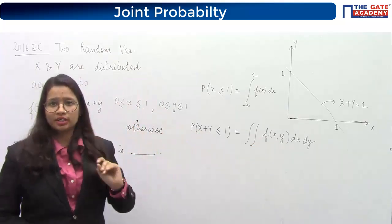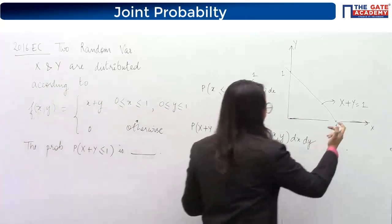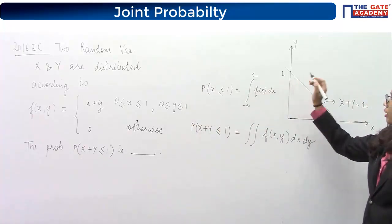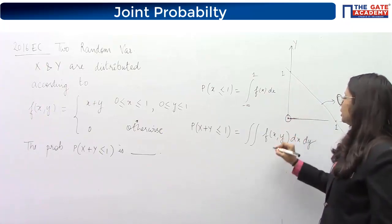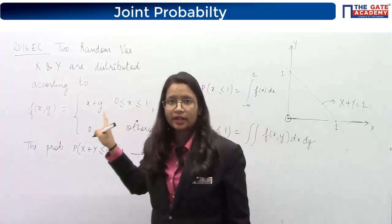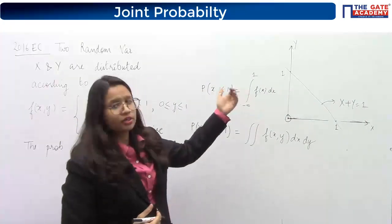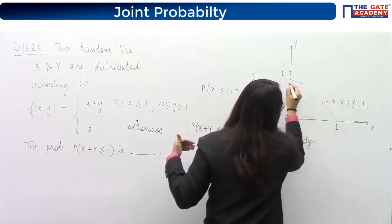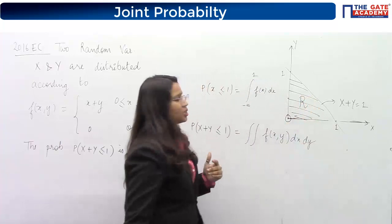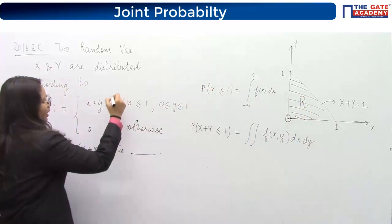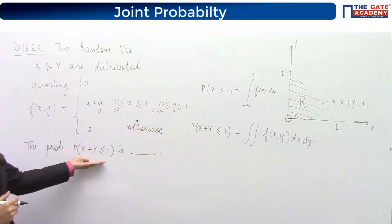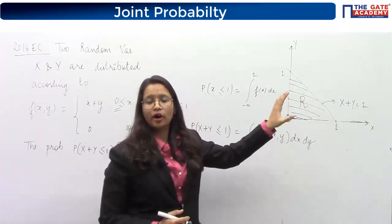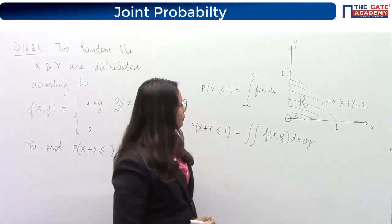The line is X + Y = 1, and we need X + Y ≤ 1. Also, X and Y are never negative. So the required region is the triangular area below the line X+Y=1 in the first quadrant — that is, the region where both X ≥ 0 and Y ≥ 0 and X+Y ≤ 1. We integrate over this region.